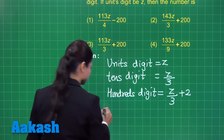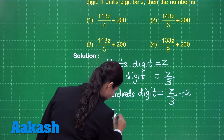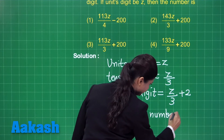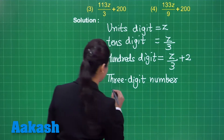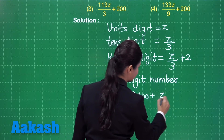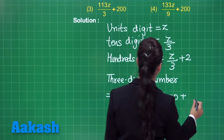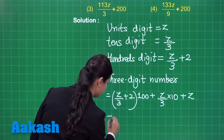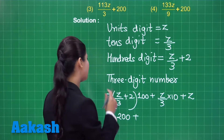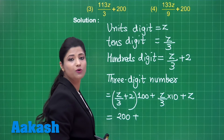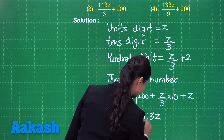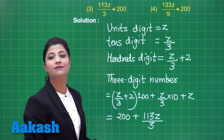Let us write it as per the place value. The 3-digit number will be given by the 100th digit (z upon 3 plus 2) into 100, plus the 10th digit (z upon 3) into 10, plus the units digit z. On simplification, you obtain 200 plus 100z upon 3 plus 10z upon 3 plus z, which simplifies to 200 plus 113z upon 3. This is the required 3-digit number.